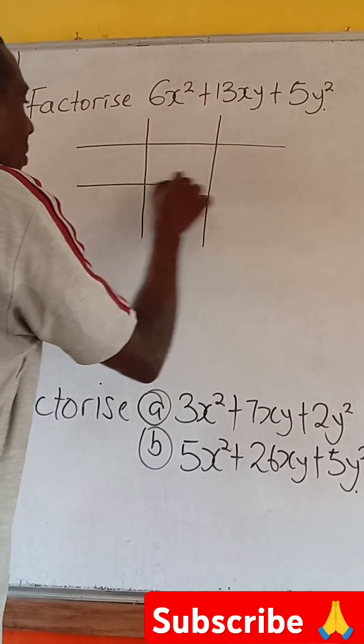So let's draw out our table. So we have 6x², we have plus 13xy, and we have plus 5y². So we look for 2 factors of 6 that we multiply.